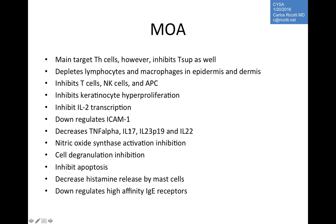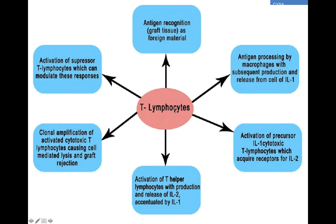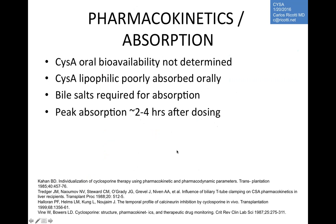Cyclosporine inhibits nitric oxide synthase activation and mast cell degranulation — important for its use in atopic dermatitis. By decreasing histamine release by mast cells and downregulating high-affinity IgE receptors, it addresses key pathogenic factors in atopic dermatitis. These mechanisms explain why this drug is so successful in treating that entity.